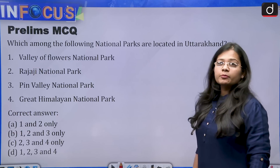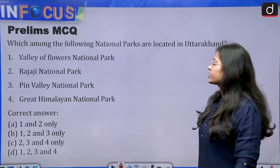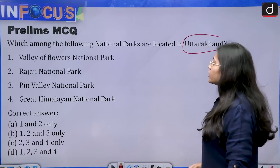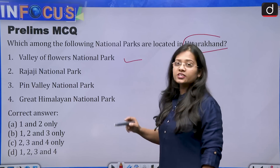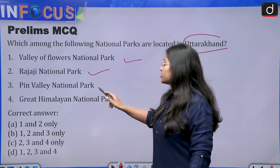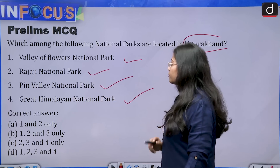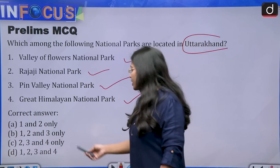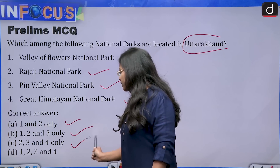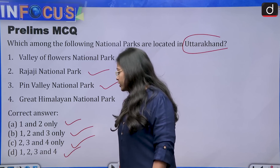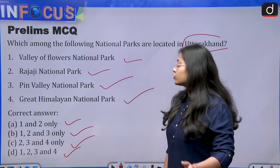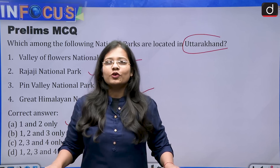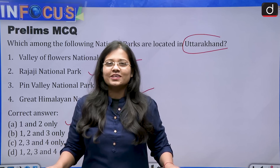For the prelims MCQ, the question is: Which among the following national parks are located in the state of Uttarakhand? (1) Valley of Flowers National Park, (2) Rajaji National Park, (3) Pin Valley National Park, (4) Great Himalayan National Park. The answer options are: (a) 1 and 2 only, (b) 1, 2 and 3 only, (c) 2, 3 and 4 only, (d) 1, 2, 3 and 4. Please share your answer in the comments. Thank you for watching!